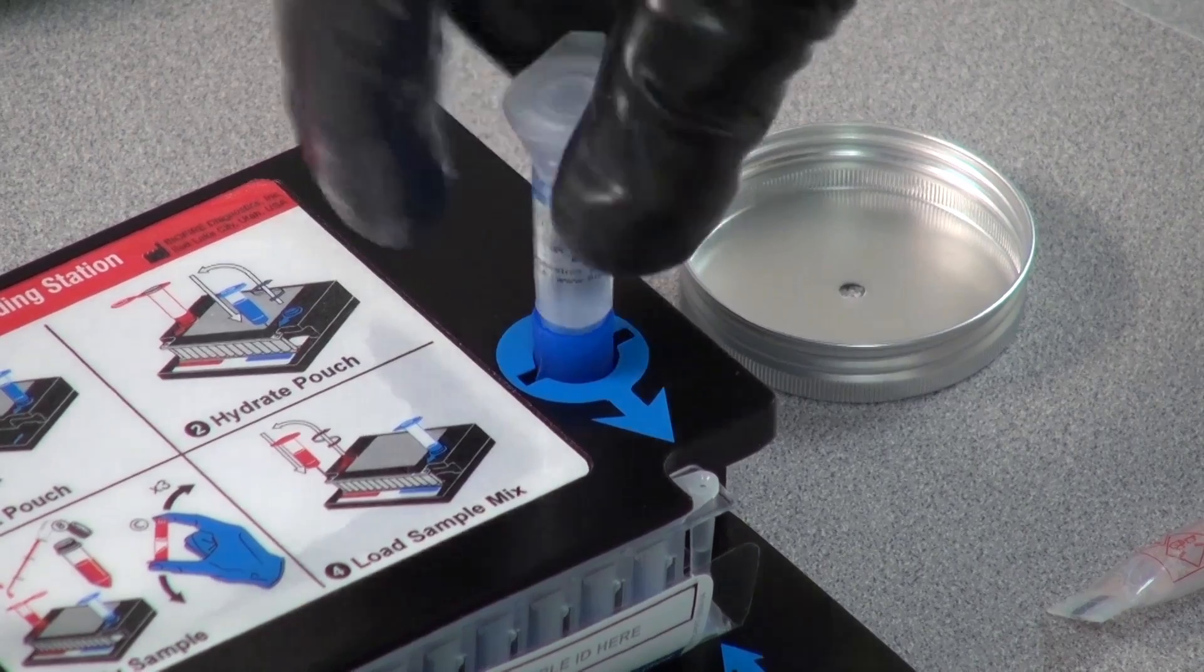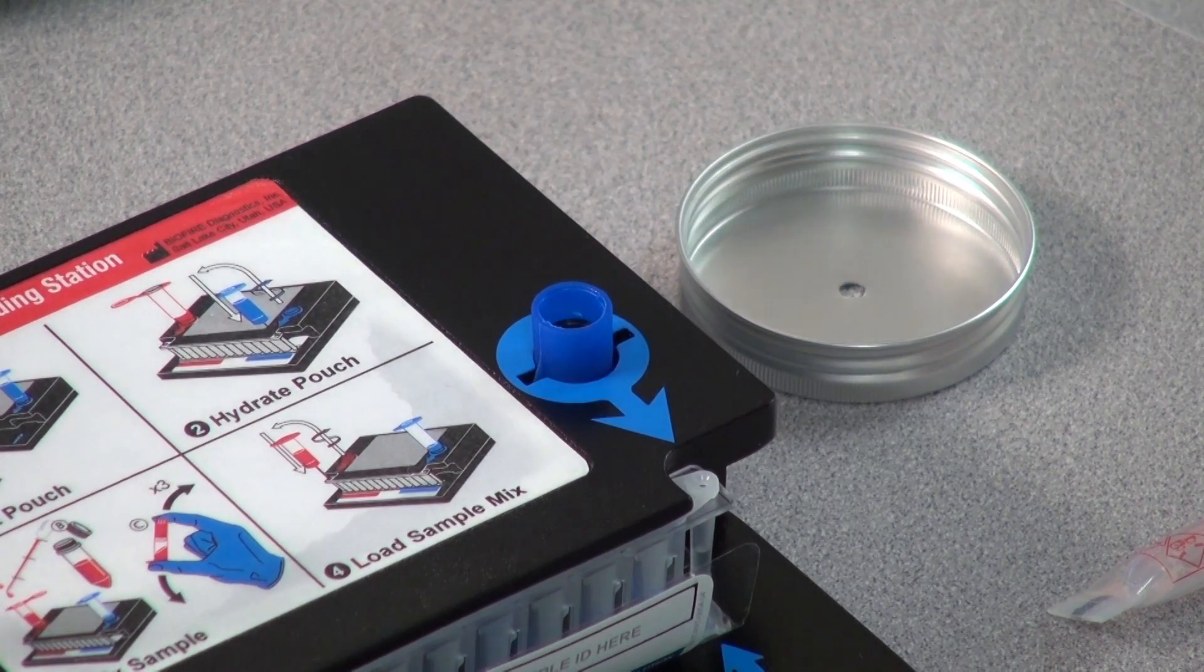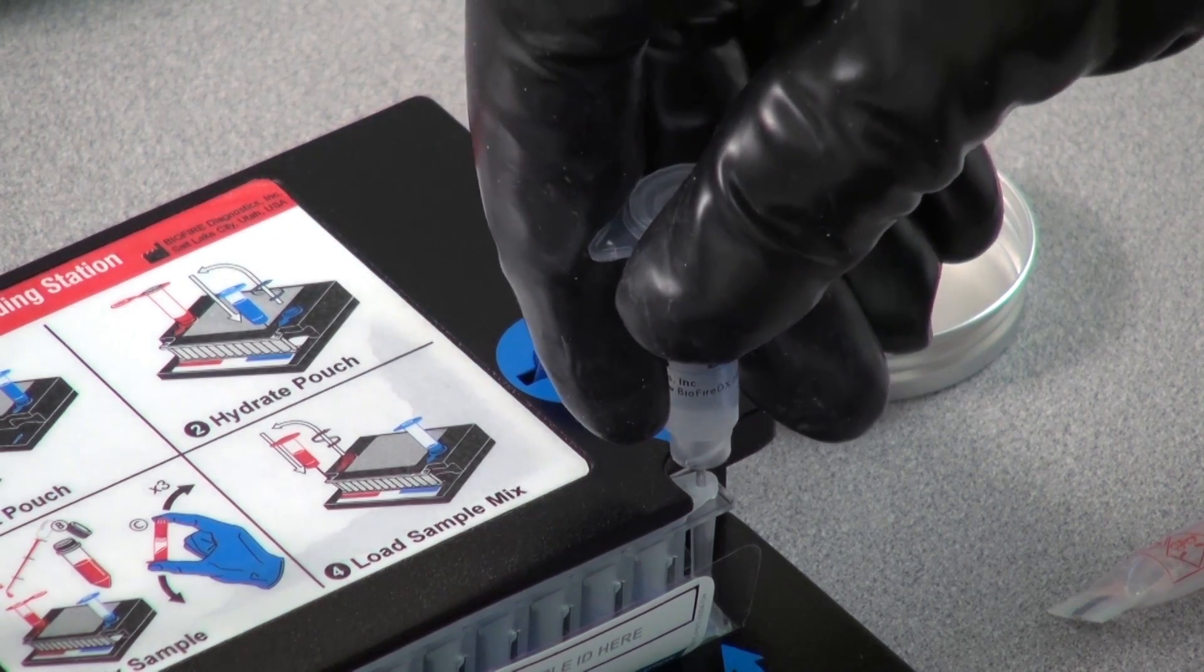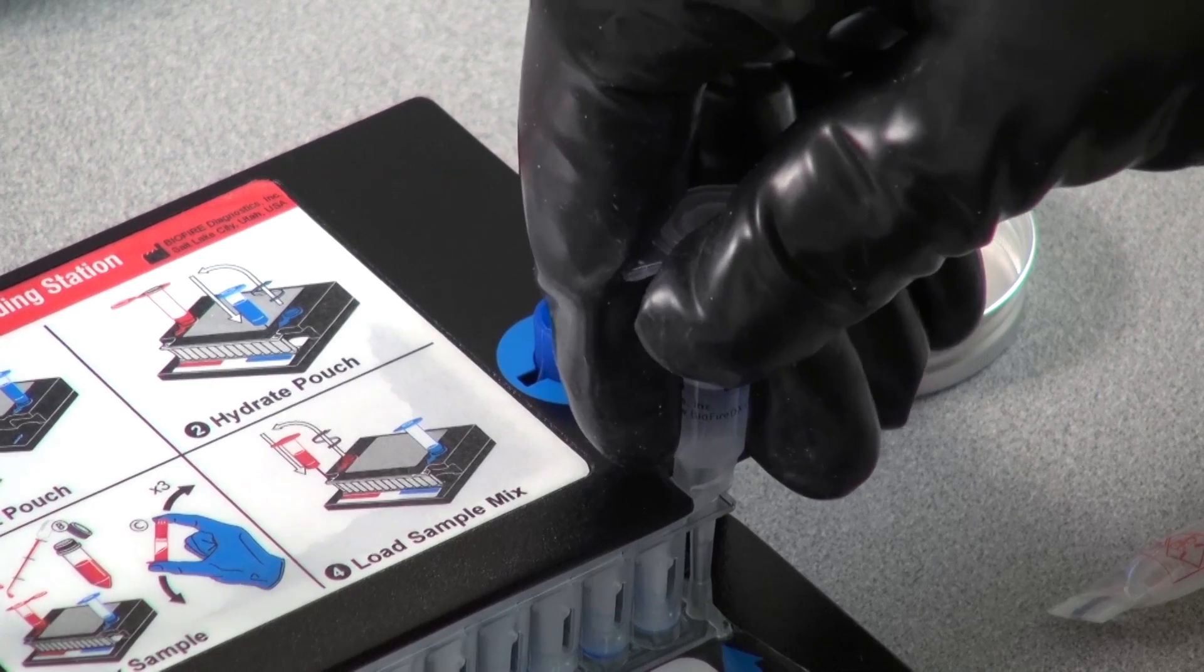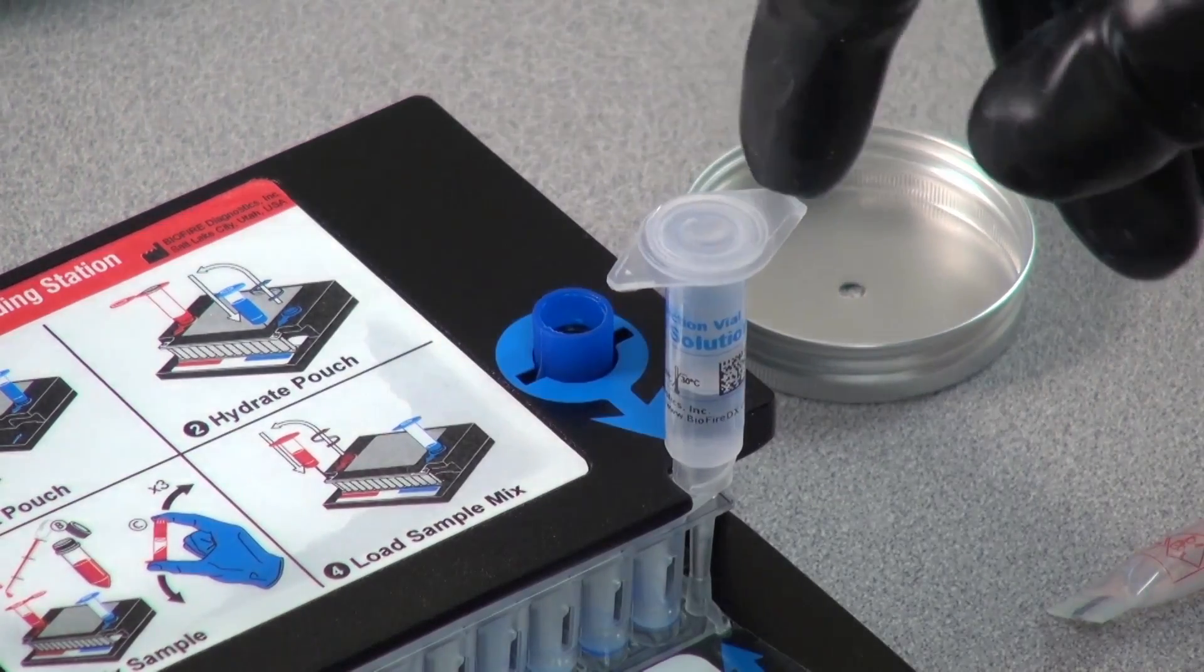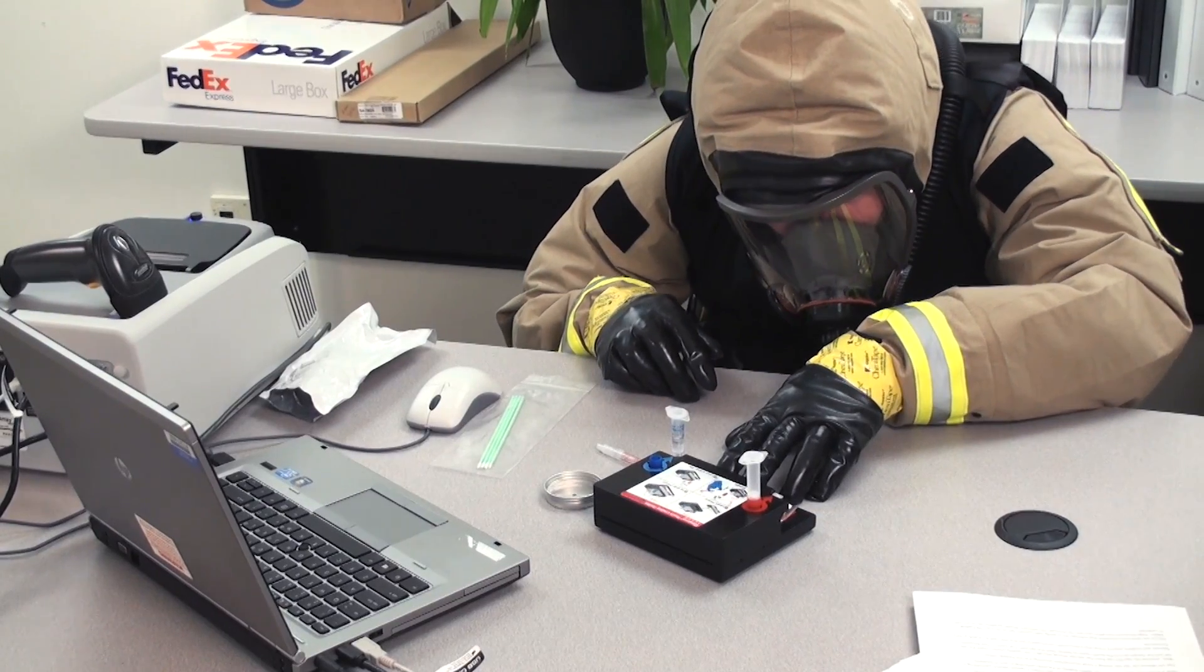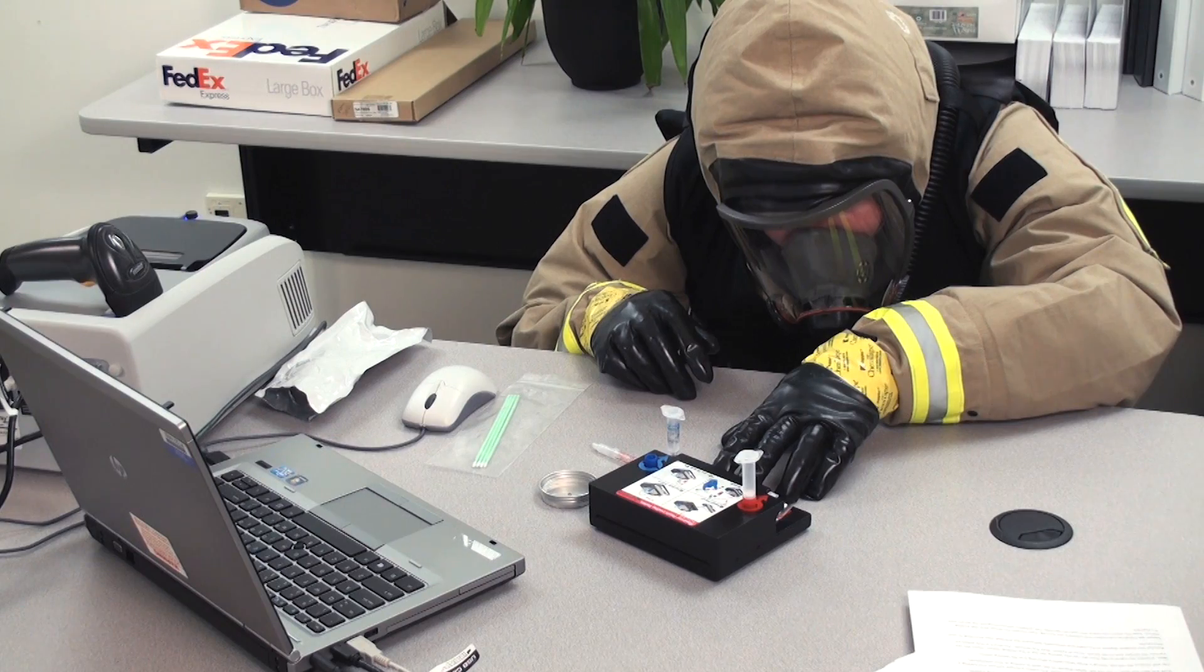Next, hydrate the pouch. Slowly unscrew and remove the blue vial, leaving the cap in the loading station. Insert the vial into the hydration port of the pouch and forcefully push down to break the seal. Wait 5 seconds for the solution to fill the pouch. Inspect to verify that all the reagent chambers are hydrated except the sample chamber on the left.